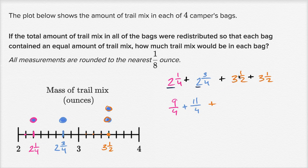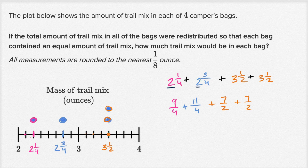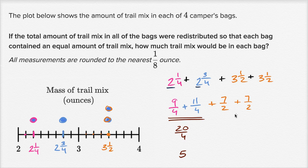Another way to do it: you could rewrite these as improper fractions — fractions where the numerator is greater than the denominator. Two and one fourth is nine fourths. Two and three fourths is eleven fourths. Nine fourths plus eleven fourths equals twenty fourths, which is five. Three and a half is seven halves, and seven halves plus seven halves is fourteen halves, which equals seven. Five plus seven is twelve ounces total.